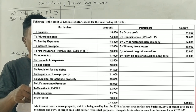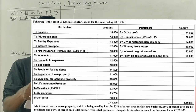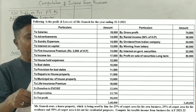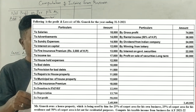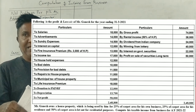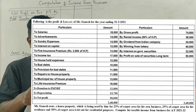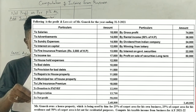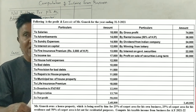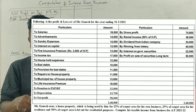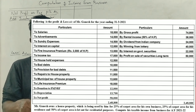Mr. Ganesh owns a house property which is used for the following purposes: 25 percent of the carpet area is used for his own business, 25 percent is used for his own residence, and 50 percent is let out for residential purposes. We need to compute taxable income from business for the assessment year 2020-21.